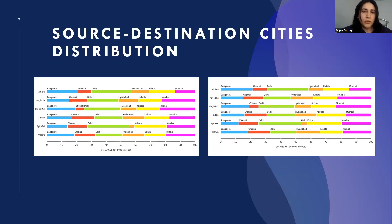You can see the source city and destination city distributions in this table. There are flights departing from every city and landing in every city, and the distribution of all cities is quite balanced.